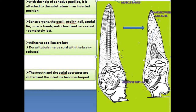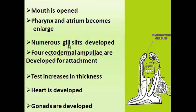The outer covering, known as the test, develops. The pharynx with numerous pairs of gill slits enlarges. The mouth and the atrial apertures are formed and the intestine becomes coiled. The mouth opens, and the pharynx and atrium become larger. Numerous blood vessels develop. Stolons for attachment are developed. Thus, the animal increases in size and thickness, the test is developed, and gonads are developed.